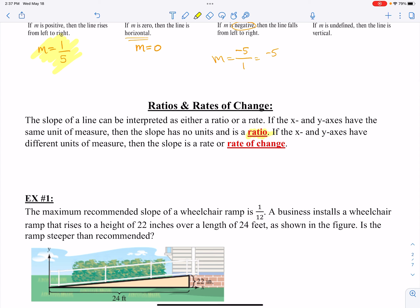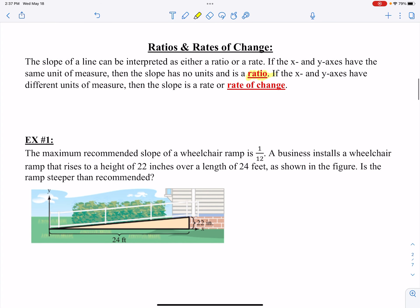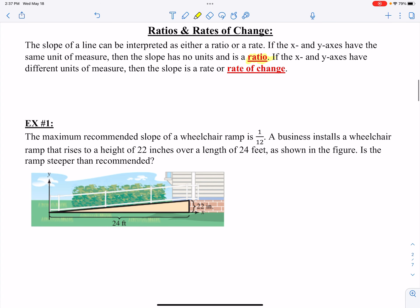But sometimes they have different units of measure and that is an example where you have a slope that is a rate or a rate of change. These next two examples will illustrate that a little bit better. Let's look at example 1 here.